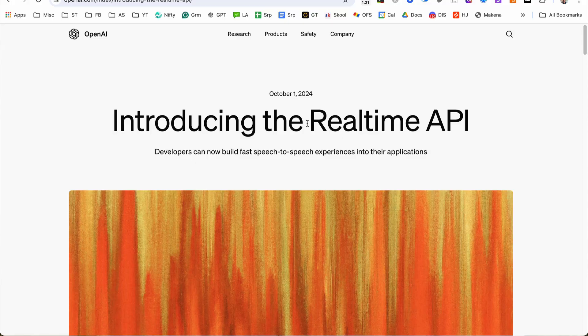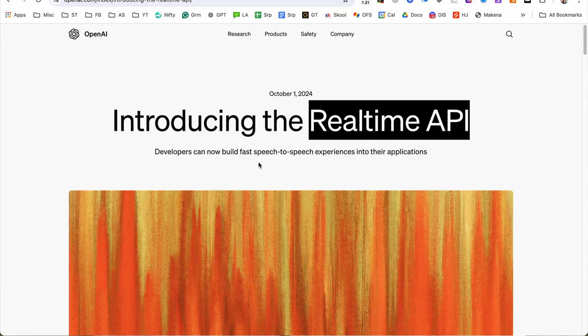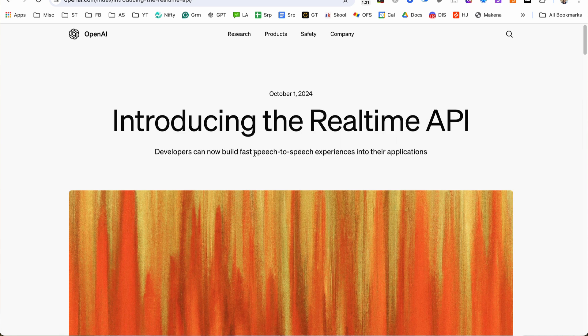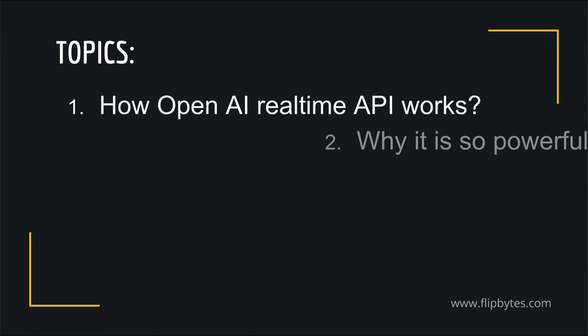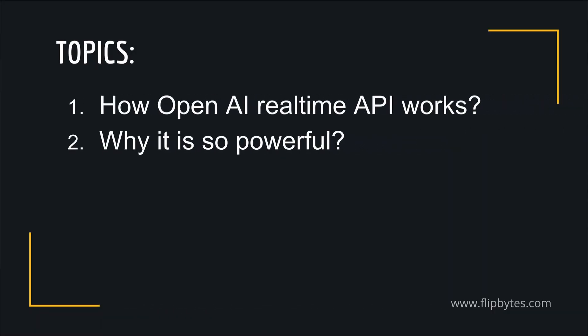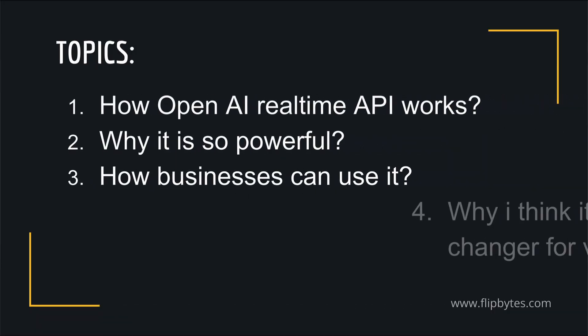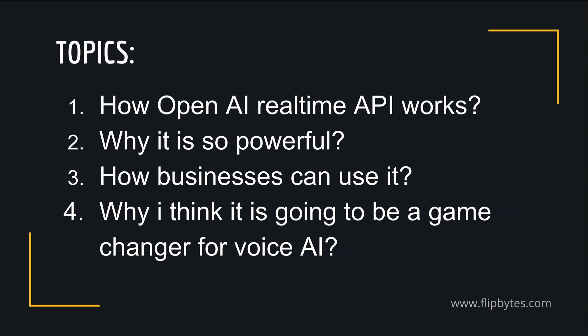OpenAI recently launched their real-time API, with which developers can now build fast speech-to-speech applications. In this video, I will deep dive into how this API works, why it's so powerful, how businesses can use it, and why I think it's going to be a game-changer for the voice AI industry. Stick around for this deep dive into the future of voice AI.